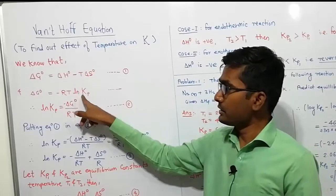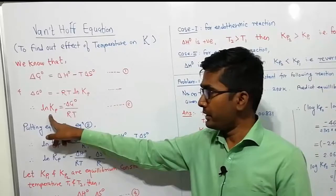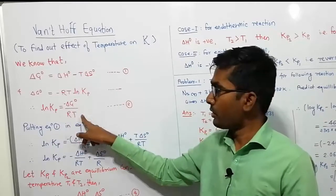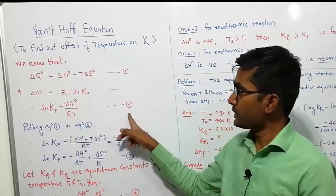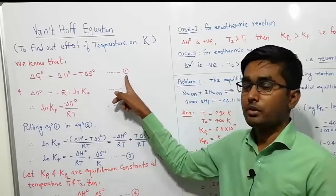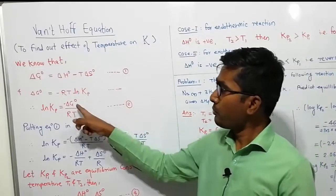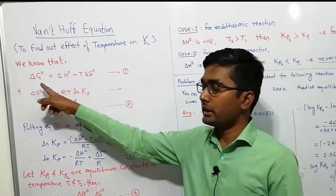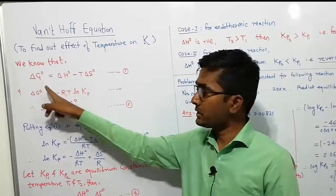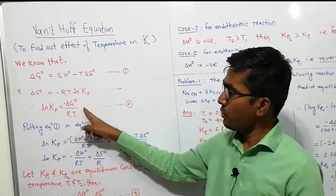Rearranging this equation, we get ln Kp = −ΔG⁰ / RT. Let us call this equation number 2 and the first equation number 1. Now, putting the value of equation 1 — that is the standard free energy change ΔG⁰ — into equation 2, we get the following.